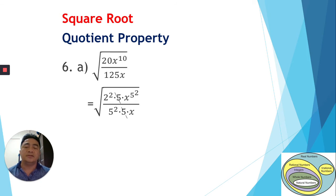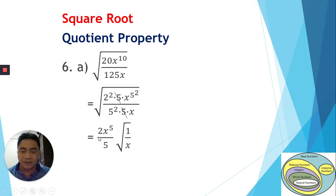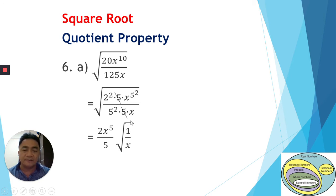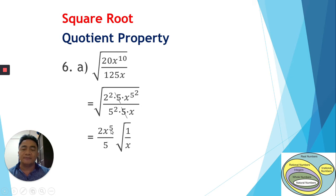Any number with power 0 is 1, so those terms cancel to 1. Extracting out: 2 comes out from the numerator, x power 5 comes out, and 5 comes out from the denominator. For the numerator, nothing is left except 1; for the denominator, only x remains — it is not a perfect square, so it stays inside. Therefore, the square root of this expression is 2x power 5 over 5, times the square root of 1 over x.